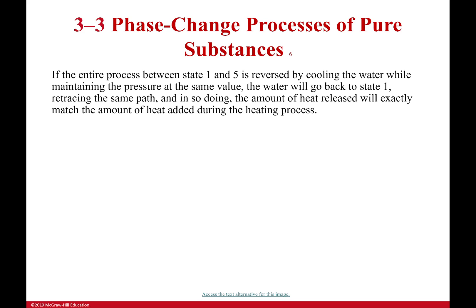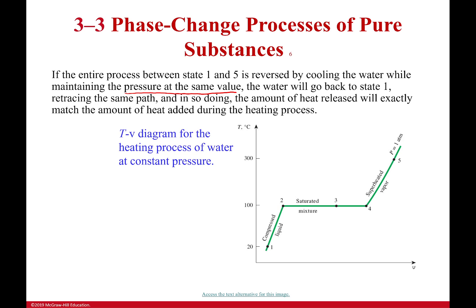If I go back through my process, all five of those states — going from a compressed liquid, or subcooled liquid, all the way to a superheated vapor — and I just maintain the pressure at the same value, what I'm going to see is something like this, and it will always follow this line. From one to two, energy is increasing before it becomes a saturated liquid. Then I increase it until it's a mixture, then a saturated vapor, and then a superheated vapor.